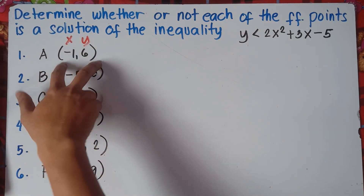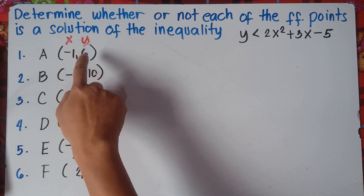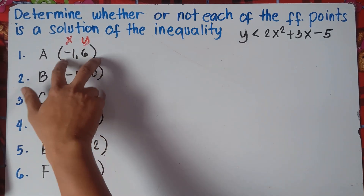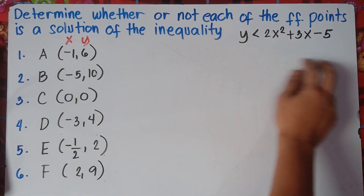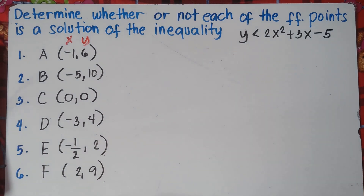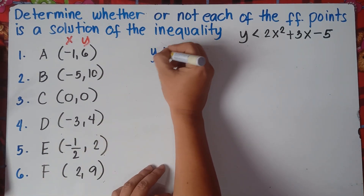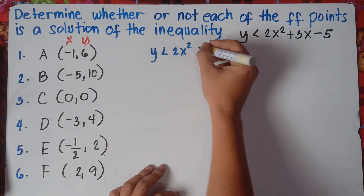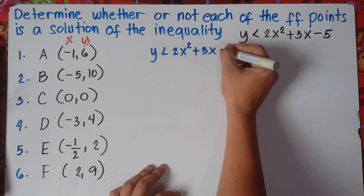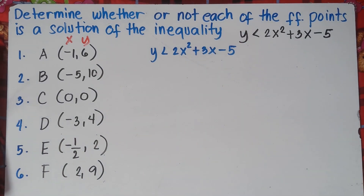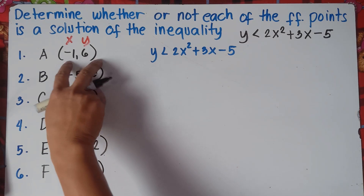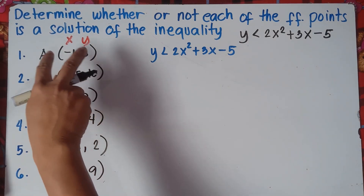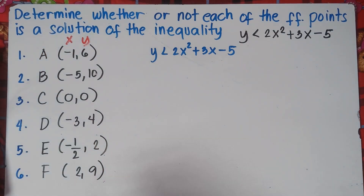So let's start with letter A. This is x, this is y. Simply substitute this value into the given equation. Let's write the equation: y less than 2x squared plus 3x minus 5. Our y is 6. Let's check if it's a solution or not. If it's true, therefore that is a solution. If it's false, therefore that is not a solution.